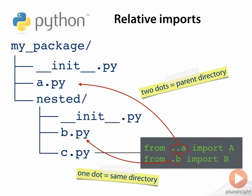Two dots means the package containing the package containing the current module, and so forth. Everything after the leading dots are simply module and package names relative to the package indicated by the dots.